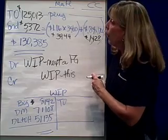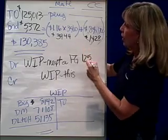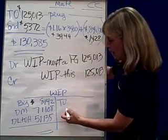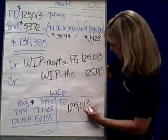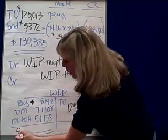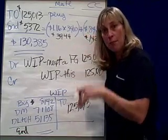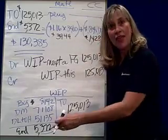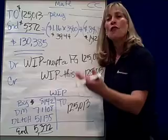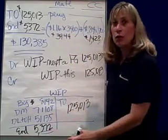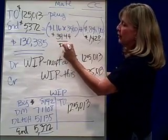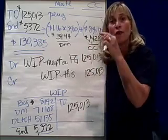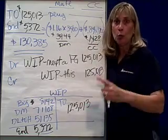The number to use is the transferred-out number: $125,013. By making and posting this entry, you'll end up with the appropriate ending balance still your responsibility in your work-in-process account of $5,372. That ending inventory then becomes the beginning inventory for the next period, carrying this much direct material cost and this much conversion cost, and we do it all over again. We do a production report for every department, every period — full employment for accountants.